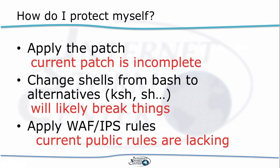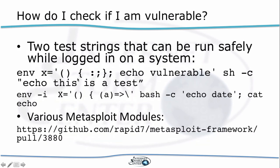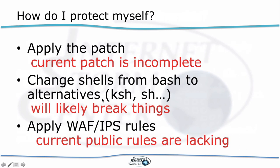There are a number of web application firewall and IPS rules, but most of the rules published so far are not that great. They're really only looking for the pattern of parentheses, space, curly bracket open — the problem is that's easily changed, for example by adding two spaces. So I consider these signatures incomplete. Still apply them and get the best signatures you can find, because there is no fundamental patch out yet. You really have to think defense in depth and try the best you can today to get yourself protected.